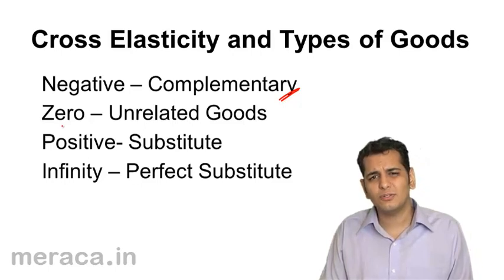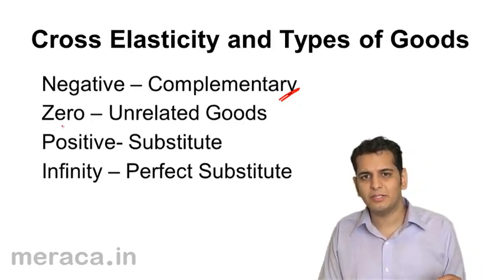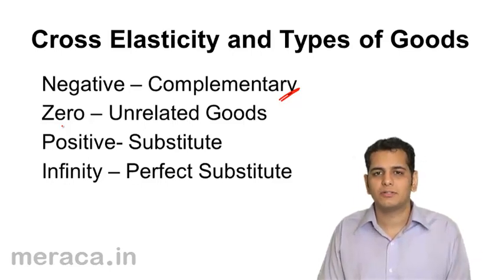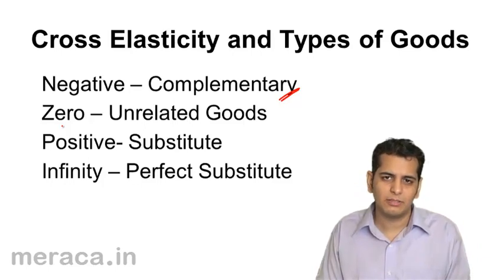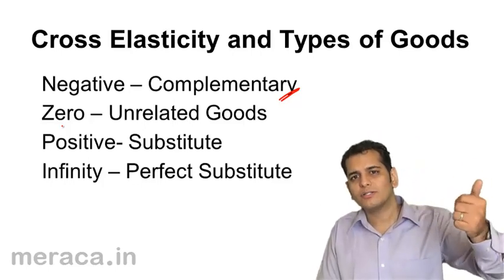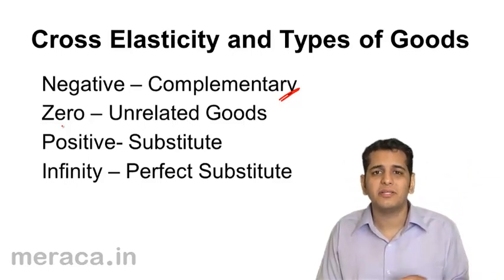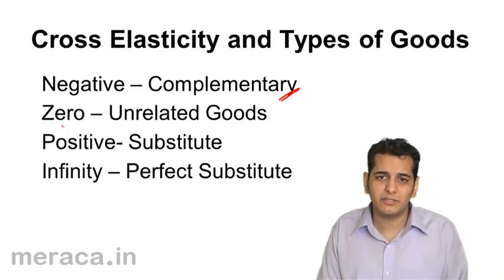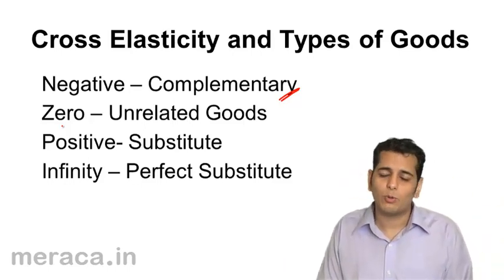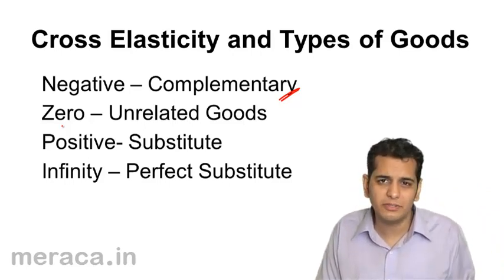Zero cross elasticity means there is no change in quantity demanded — quantity demanded remains the same. So when the price of a product is changed, the quantity of the other product remains the same. That means there is no relation between the two. The price of one is not affecting the quantity of the other, which simply implies that there is no relation between the two goods.